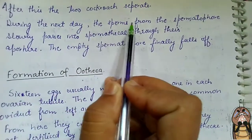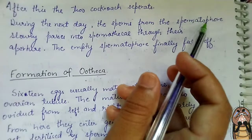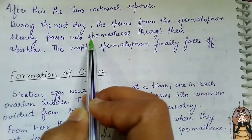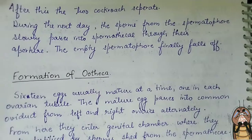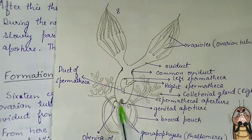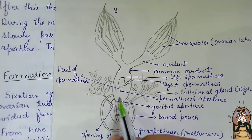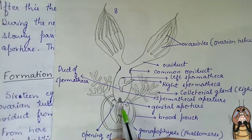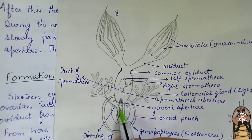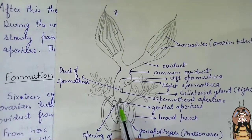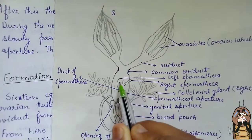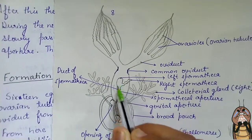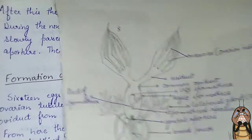During the next day, the sperm from the spermatophore slowly passes into the spermatheca. The spermatheca is present in the female reproductive system, and all the sperms from the spermatophore travel and get stored in the left spermatheca.